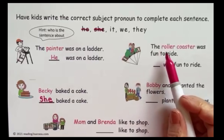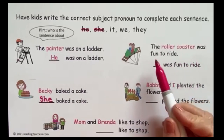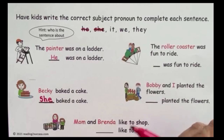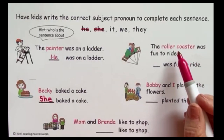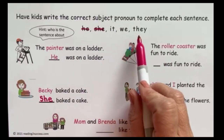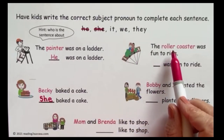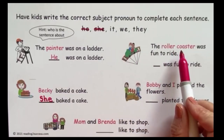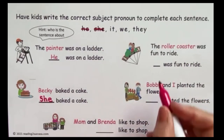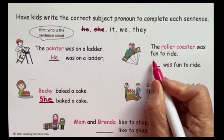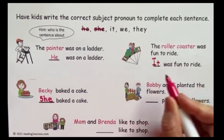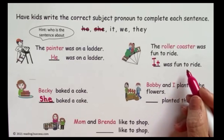The roller coaster was fun to ride. What was fun to ride? The roller coaster. So we need to find a pronoun that replaces 'roller coaster.' It is a thing and it is one thing, so 'it' would be perfect. We're going to write 'it' — capital I-T. It was fun to ride.